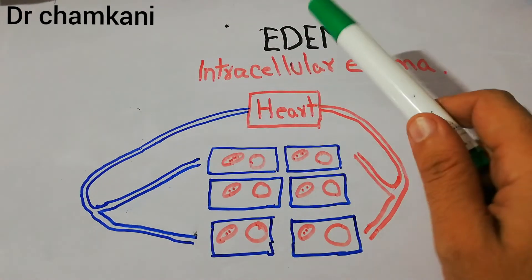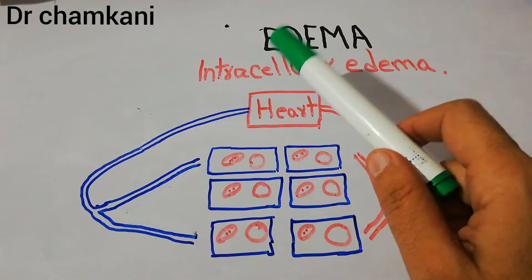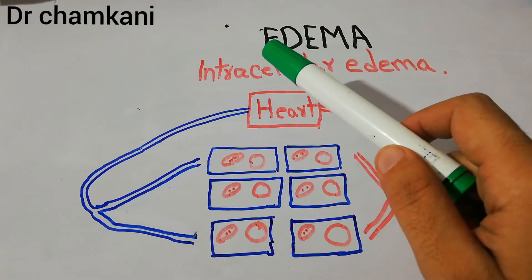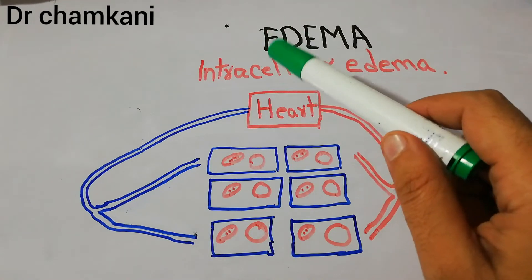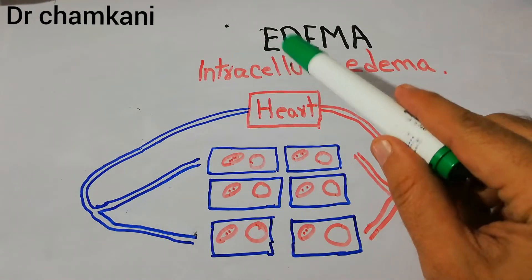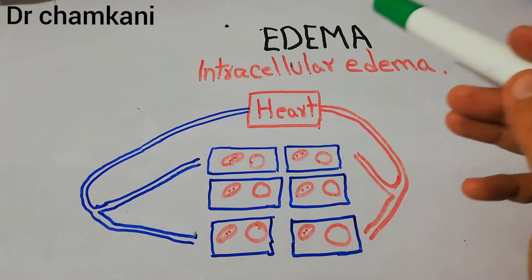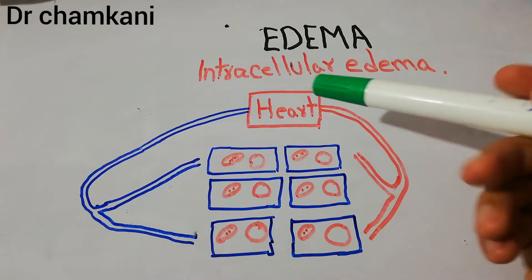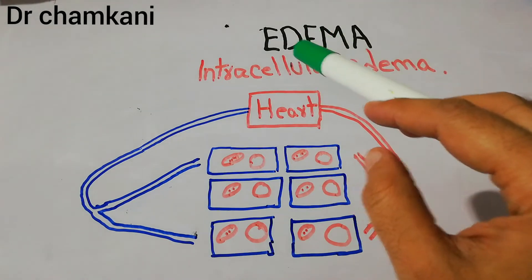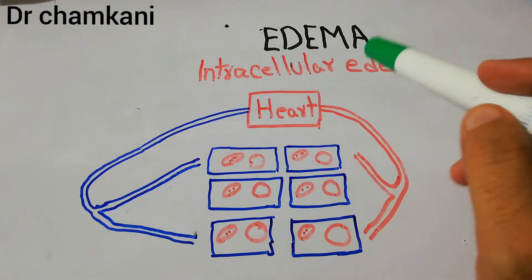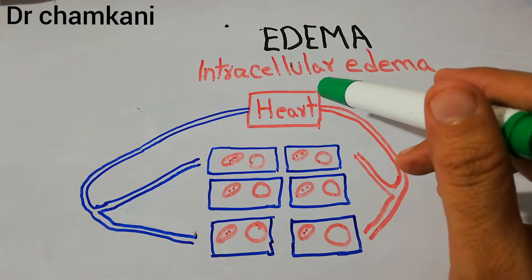Edema has a lot of classification and a lot of types, but from a physiology point of view, we have classified edema mainly into intracellular edema and extracellular edema. In this lecture we will talk about intracellular edema, and in the next lecture we will discuss extracellular edema.